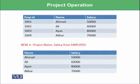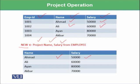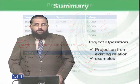We have an employee relation with employee ID, name, and salary. We construct a new relation called 'new' using the project operation, specifying name and salary from employee. It will add all employees: Ahmed and 50,000 as the first tuple, Ali and 60,000 as the second, Ayaan and 80,000 as the third, and Akbar and 70,000 as the fourth tuple of this new relation formed using the project operation.